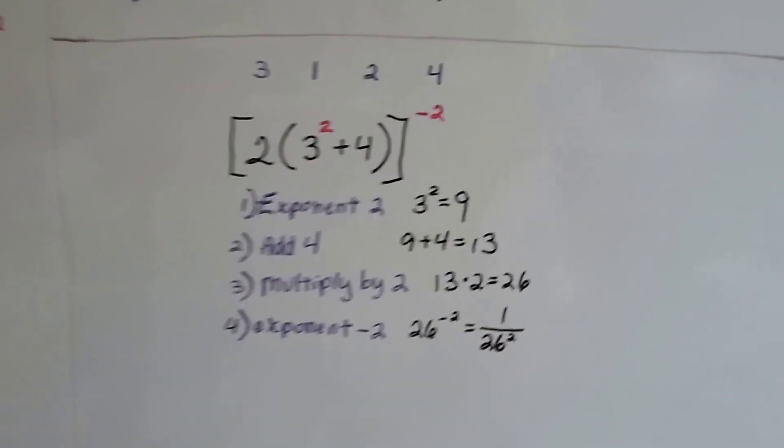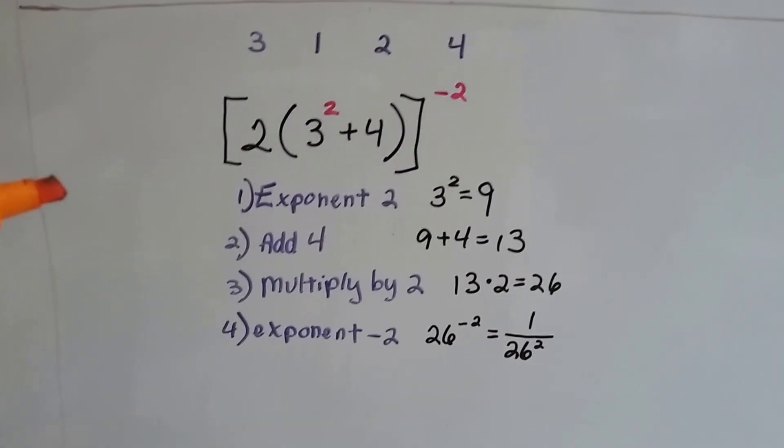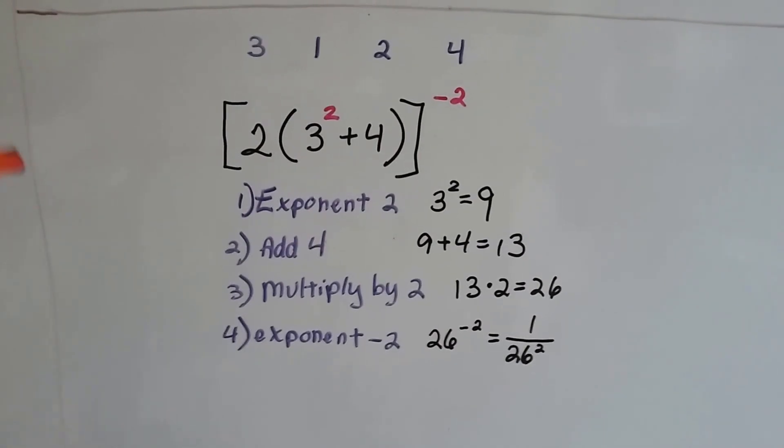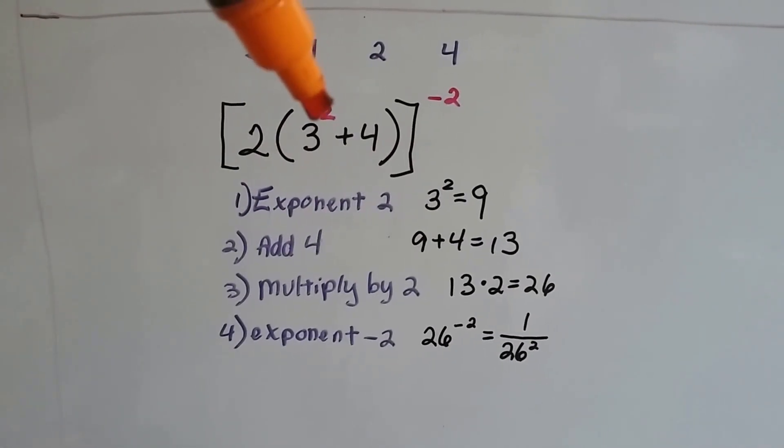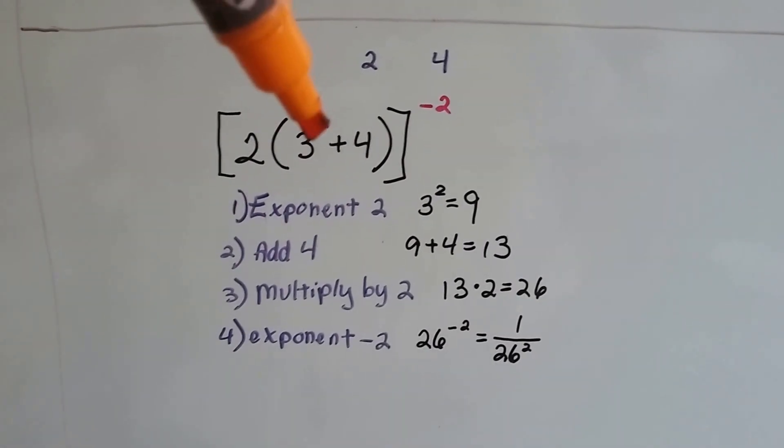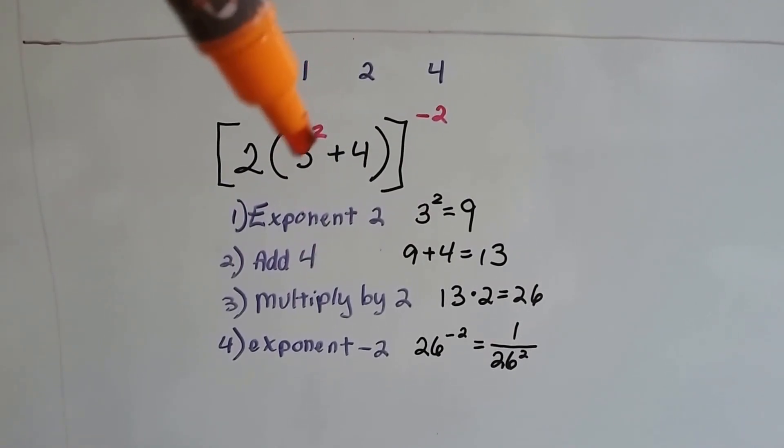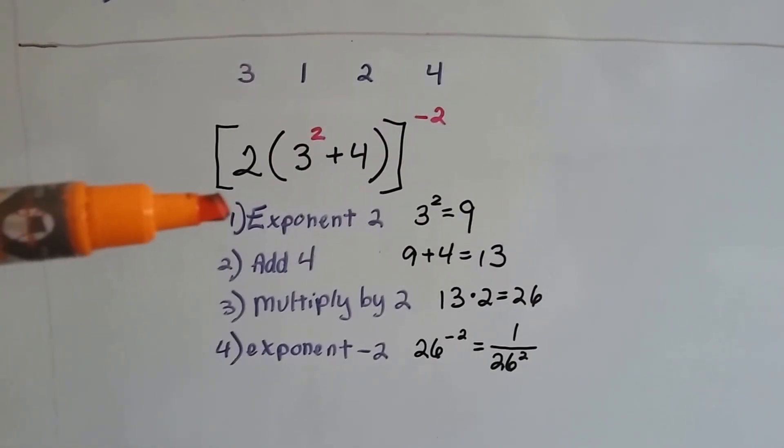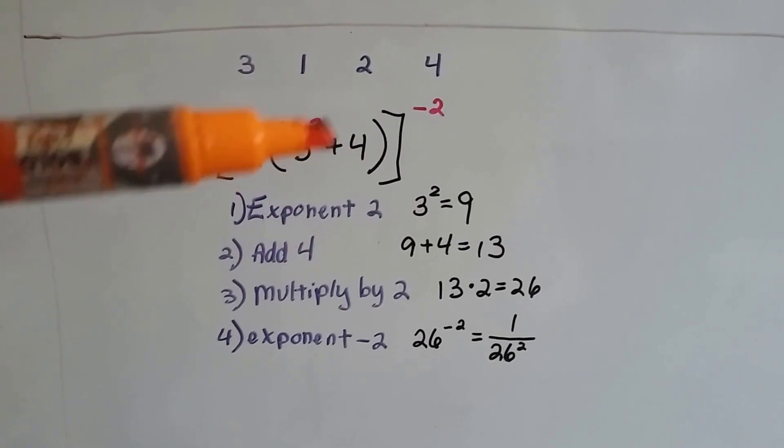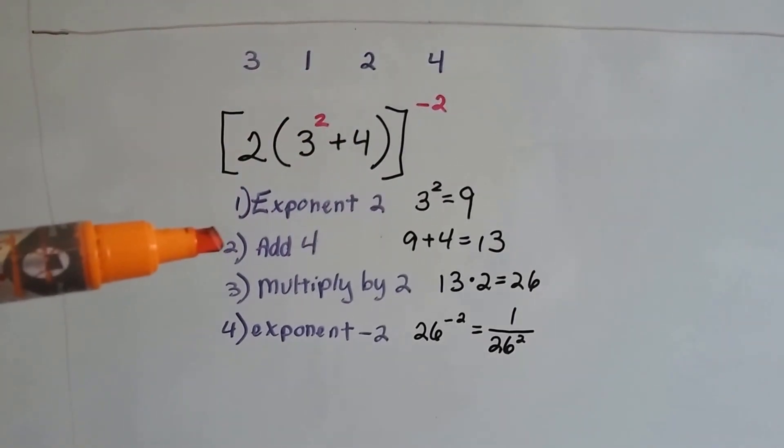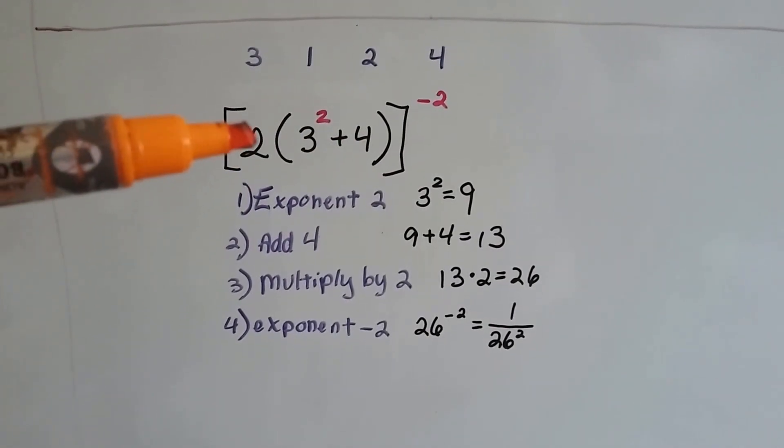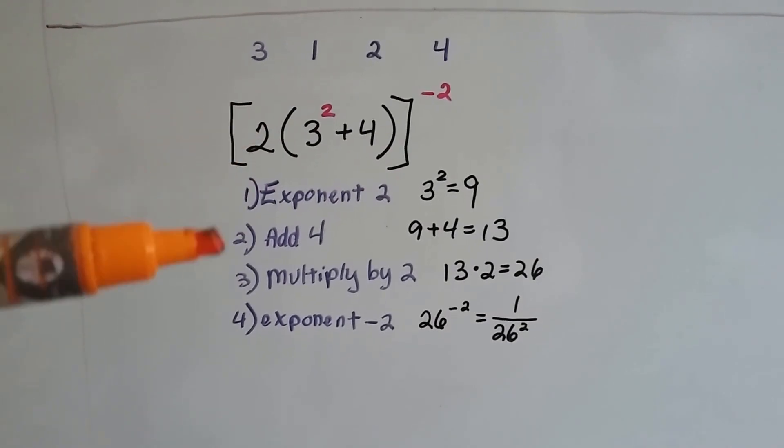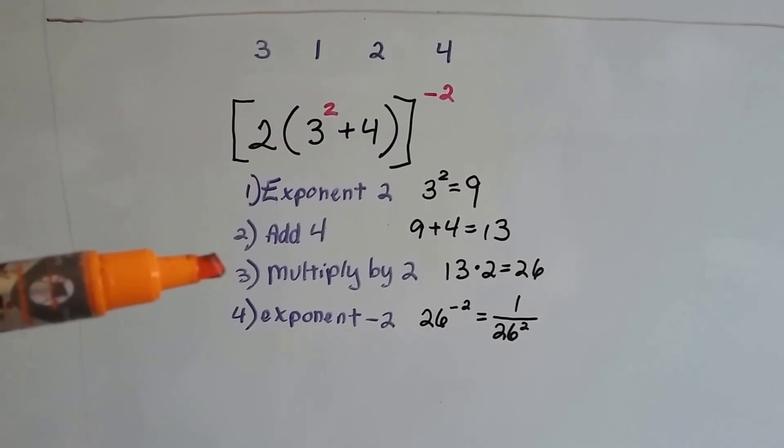Take a look at this one. It seems a little smaller, but it's still just as difficult. We're going to start with this exponent inside the parentheses. So 3 squared is 9. Now we're going to add the 4. That's step 2. 9 plus 4 is 13. Now we're going to multiply it by this 2 inside the bracket. 13 times 2 is 26.